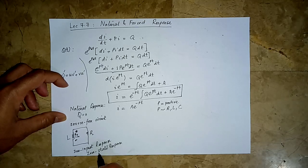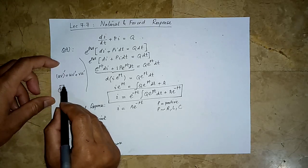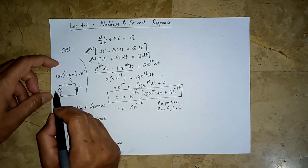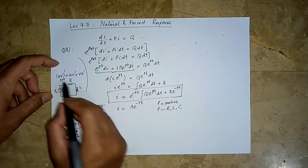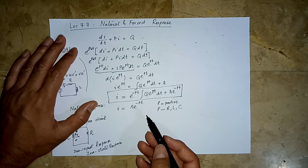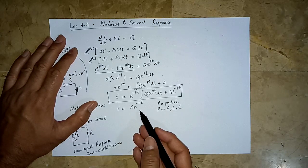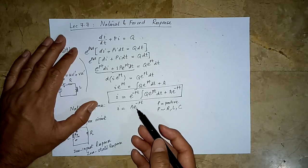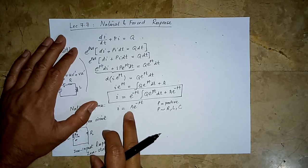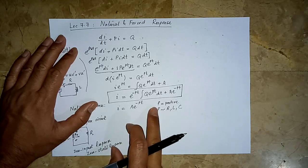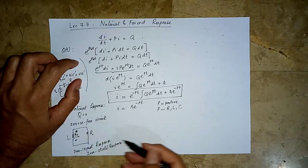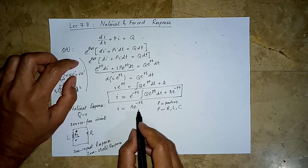In zero-state response we want to find how the input drives the circuit — for example, a voltage source with R and L where the inductor has no initial state before the circuit starts operation. In circuit analysis we typically use the terms natural response and forced response, or equivalently transient response and steady-state response. In the source-free (natural response) case there is only a transient term and no steady-state term, because once all the energy is released the inductor has no remaining energy — that is its steady-state condition.